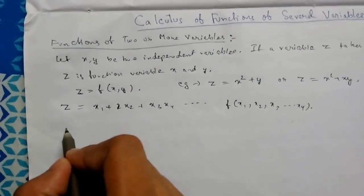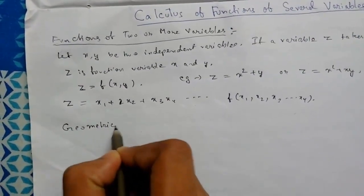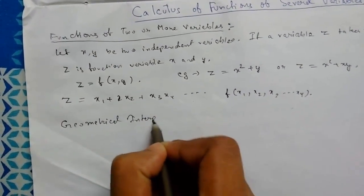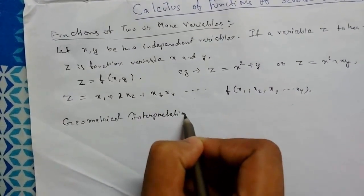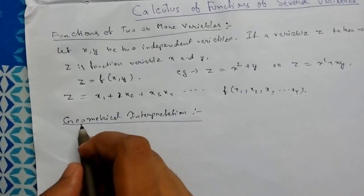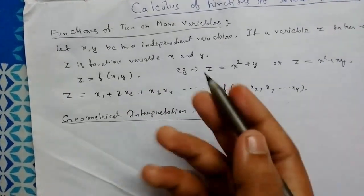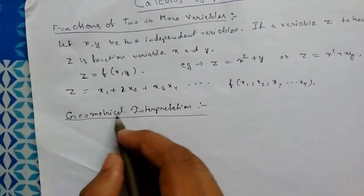So now we will be seeing what is the geometrical interpretation of this function of two variables. So we do know that for a single variable, for a case of single functions of single variable, we see that the curve represents a